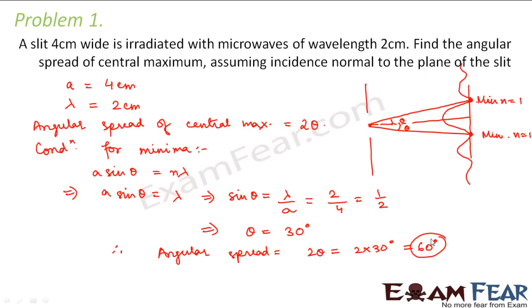So 60 degrees would be the angular spread of the central maximum. When we talk about the spread of central maximum, the endpoints of the central maximum are nothing but the minima. So we apply the condition for minima at these two points, because this angle is the angle subtended by the first minima at the center, and similarly for the other side.